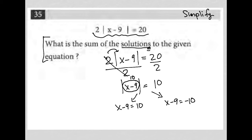is equal to 10, then the absolute value of 10 is 10. So that's one way. But if the stuff in here is equal to negative 10, then the absolute value of negative 10 is also 10. So we need to figure out both answers.